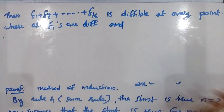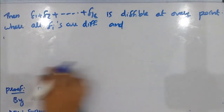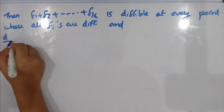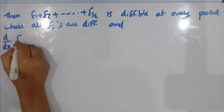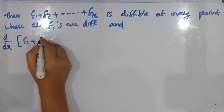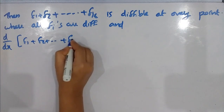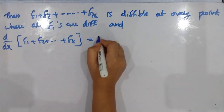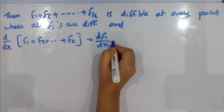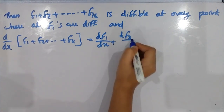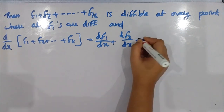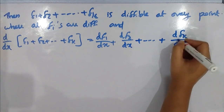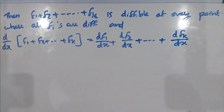And the derivative: d by dx of f1 plus f2 plus etc. plus fk is equal to df1 by dx plus df2 by dx plus etc. plus dfk by dx.